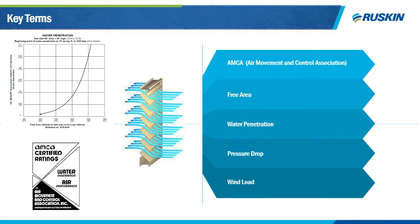And finally, there's wind load, which is probably one of the most important aspects to consider when looking at a louver. Wind load refers to any pressures or forces that wind exerts on a building or structure. Different areas will have different design wind load requirements depending on the basic wind speed of the area and the size and shape of the building. Ruskin's standard wind load is 20 pounds per square foot, but we can build to any requirement and provide additional support to the louver to ensure it meets those requirements.